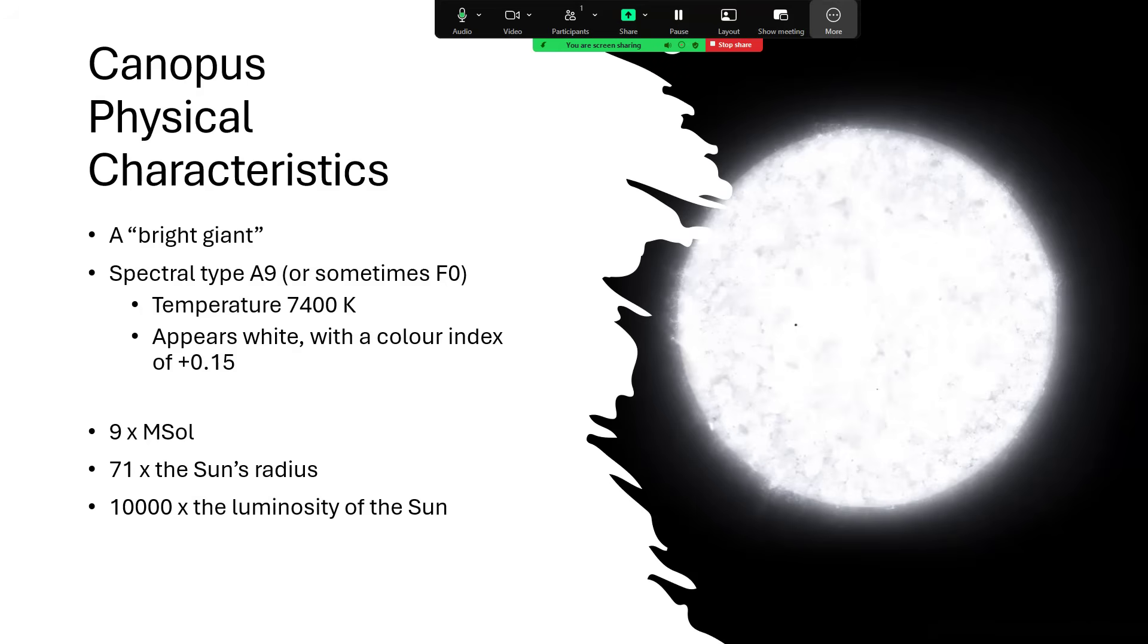Now, some people have described it as yellow, usually from the Northern Hemisphere observations, because the star is very low in the sky.